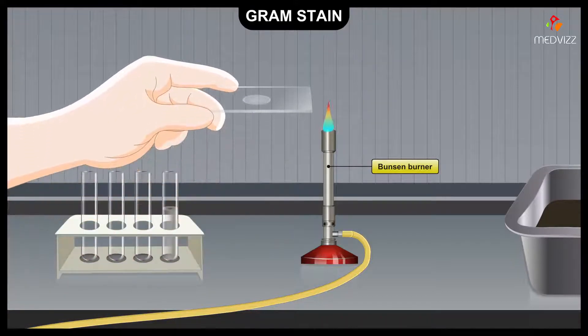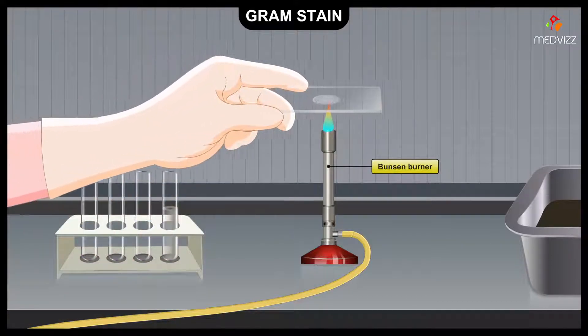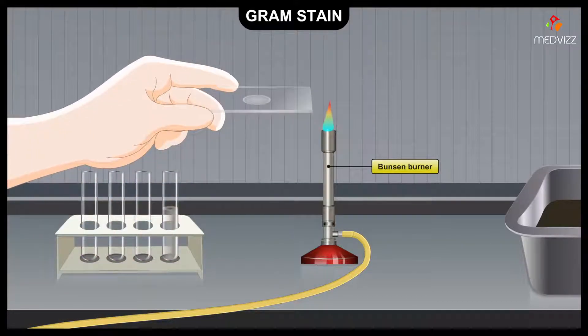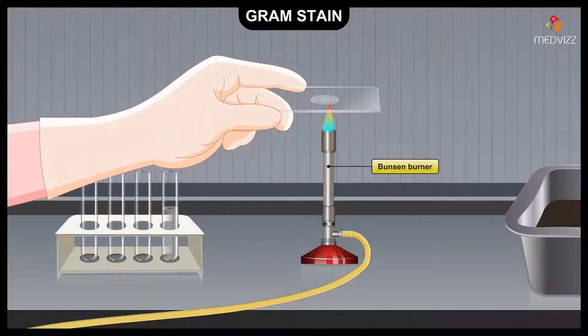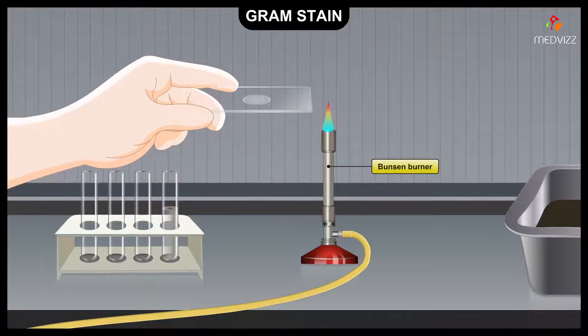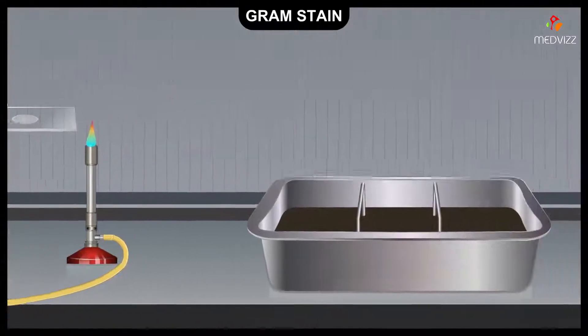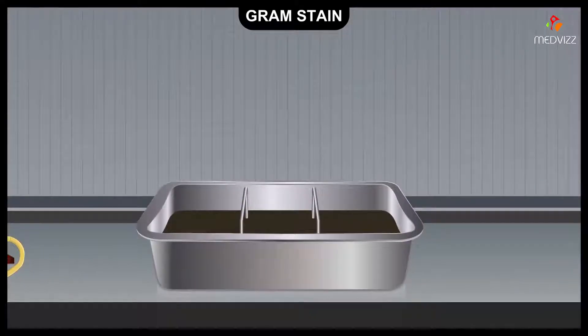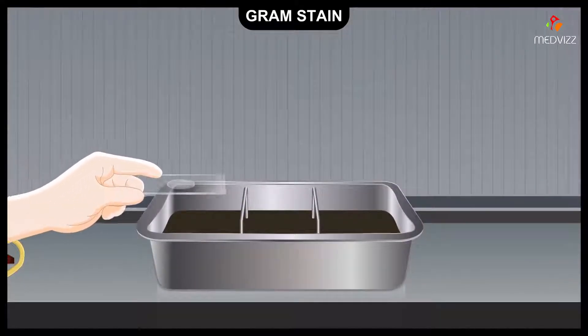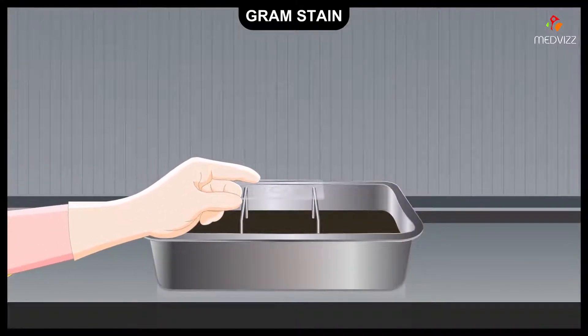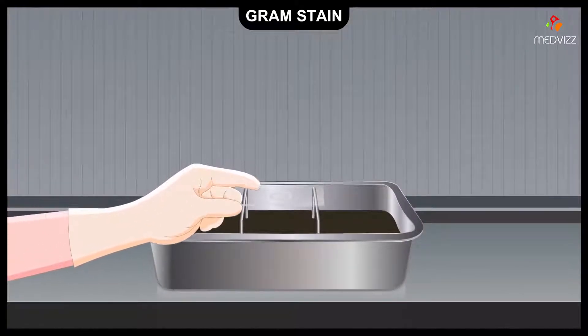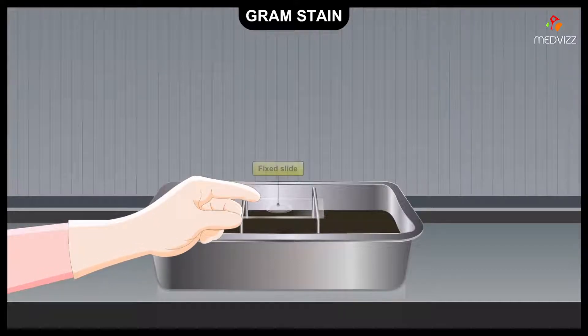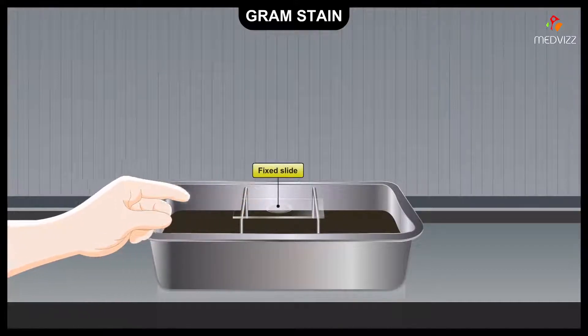Fresh cultures must be used because as cells age they lose their ability to retain the stain. The cells are then fixed to the slide by passing slightly above the flame of a Bunsen burner. After passing above the flame, the slide should feel warm when touched to the back of the hand but should not be too hot.